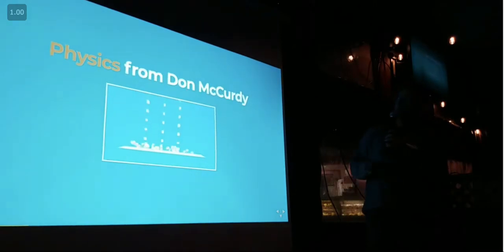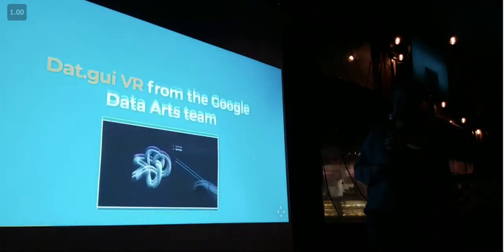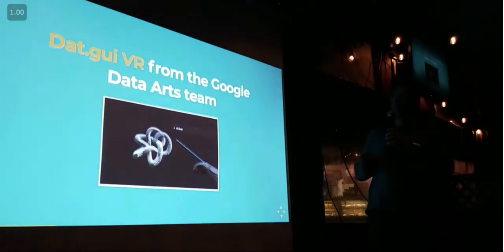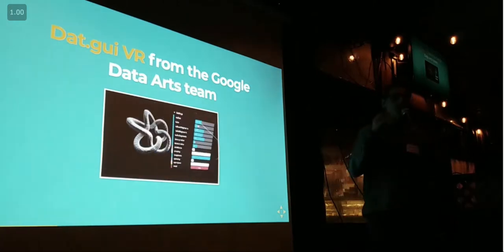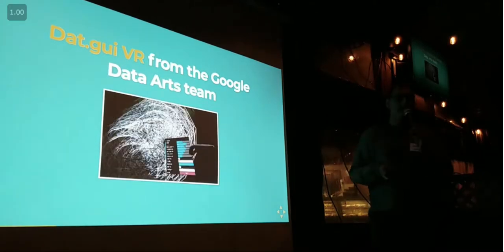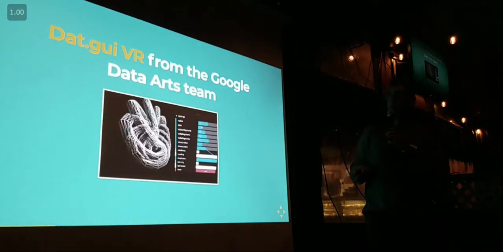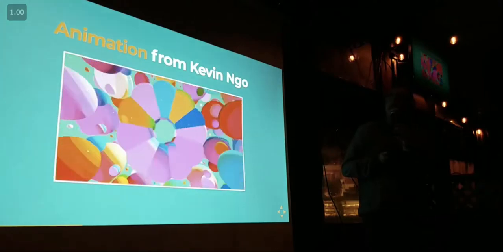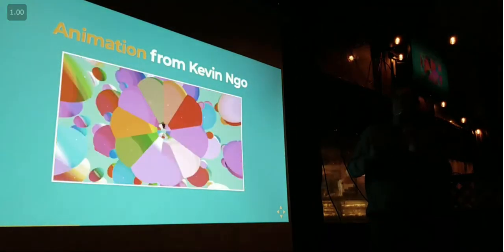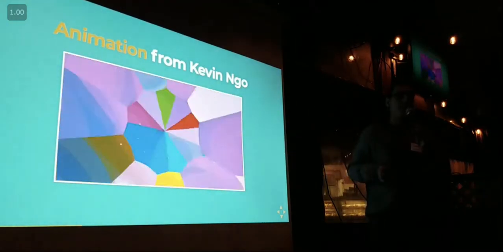A component could be something like this, which is an implementation of the Cannon.js physics system. It could be something complicated, or something still complicated but on a more individual component basis. There's this example from the DataArts team at Google implementing .GUI, which is a popular entity selector library. A component can be as extensible as an entire animation system. A-Frame by itself ships with its own animation system, but some people decided that wasn't declarative enough, so there's this really beautiful declarative animation system.